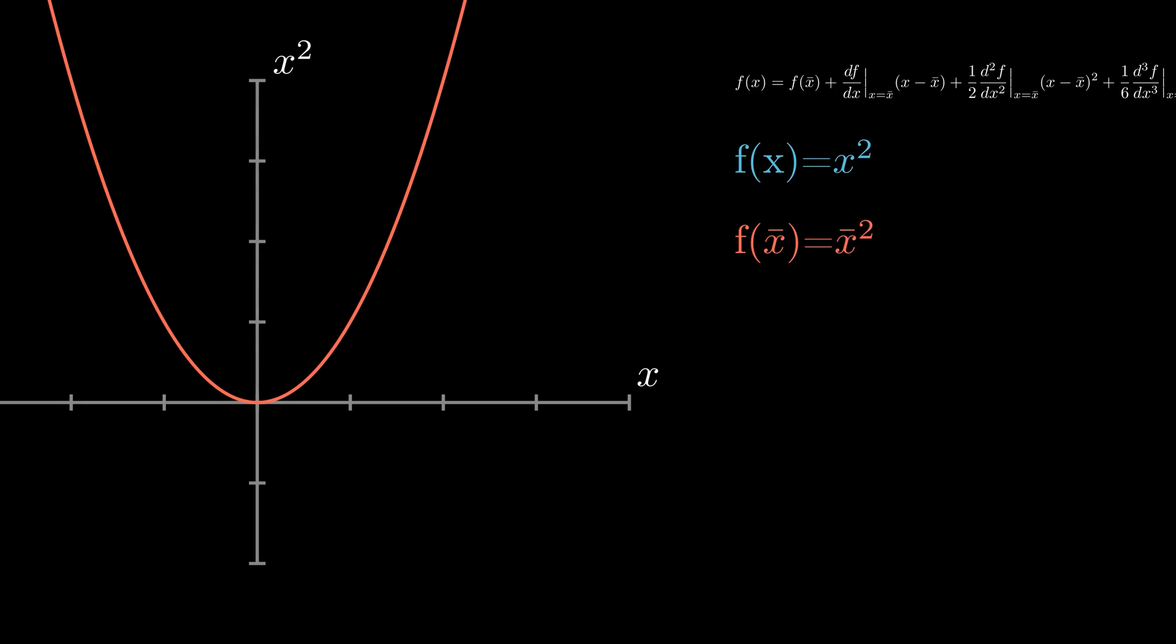Our second term, which is the first derivative of f evaluated at x̄, well the first derivative of x squared is 2x and at x̄ that will simply be 2x̄. And don't forget when we substitute that back in, it'll be multiplied by the (x - x̄) term.